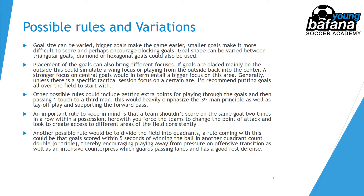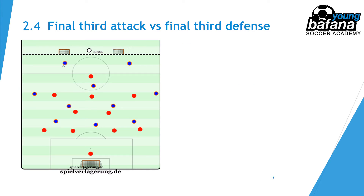The next exercise is called final third attack versus final third defense, which I use quite regularly with my under-18s. Due to constraints at our training field, we always have two mini goals about 15 meters behind the halfway line where the coach stands with balls, and then the blue team attacks the big goal on the other side of the field. We very seldom are able to train on the full field with 11-v-11, so this exercise fills that tactical preparation need, typically used on Thursdays.